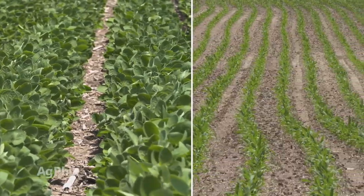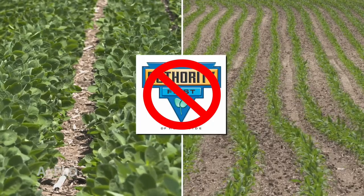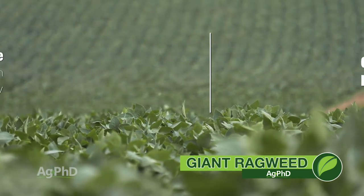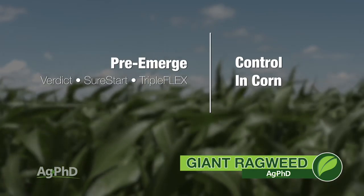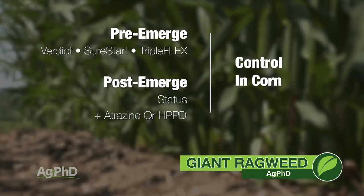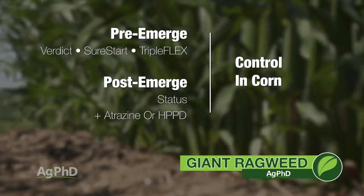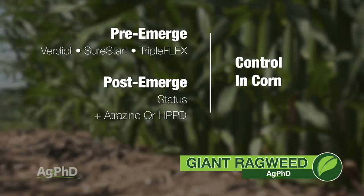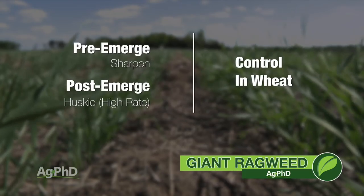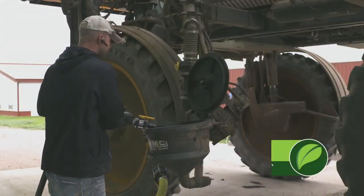The problem with using Authority First Rate pre is that you can't use it again post safely, especially if you want to rotate to corn the next year. For post-emerge options in soybeans, I really like Liberty, and also Xtend in Roundup Ready to Xtend soybeans — both work very good on giant ragweed. Turning to corn, I'd suggest Verdict down pre. Post-emerge, the best product is Status — you can throw in some atrazine or an HPPD with Status to really bump up control. In wheat we don't normally face giant ragweed problems, but you can start with Sharpen down and come over the top with a high rate of Huskie.